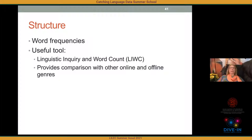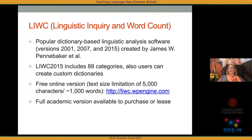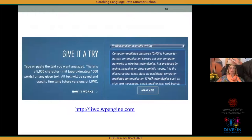LIWC includes 88 different categories of grammatical words and semantic categories — like cognitive words, happy words, sad words, words about sex. Words are pre-categorized, which is why it's a dictionary program. Users can also create custom dictionaries. There's a free online version limited to 5,000 characters or about 1,000 words, and you can purchase the full academic version or lease it for about $10 a month.